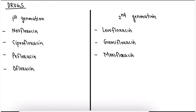The drugs included in fluoroquinolones are divided into first and second generation. In the first generation we have norfloxacin, ciprofloxacin, pefloxacin, and ofloxacin. In the second generation we have levofloxacin, gemifloxacin, and moxifloxacin.